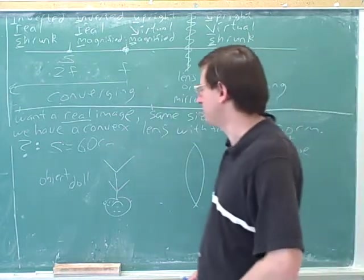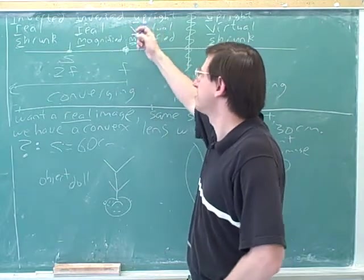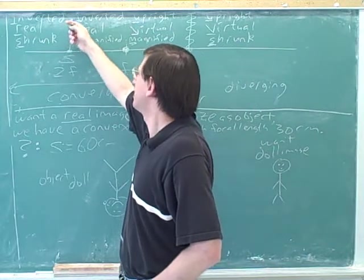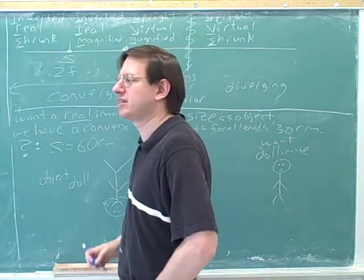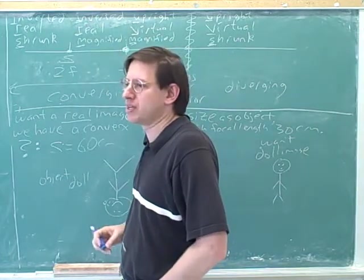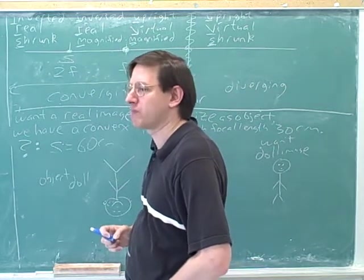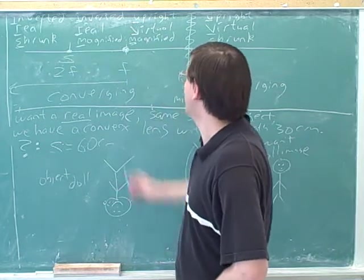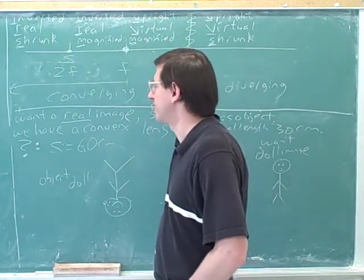So besides the words inverted and upright, we might also, maybe these are not very good terms. So maybe we should say opposite orientation and same orientation. Those would be clearer terms. Inverted means that the image has the opposite orientation to the object. And upright means that the image has the same orientation as the object. Whether it's upside down or right side up, it just depends on how you're holding the object. So the terminology can be confusing.